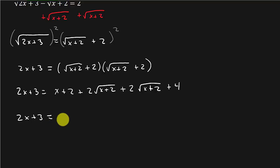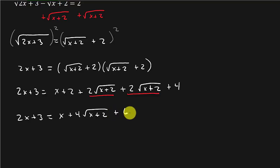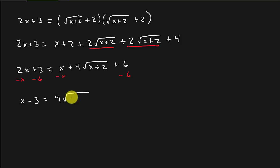So now combining like terms: 2x plus 3 equals x plus 4 square root of x plus 2 plus 6. Just like 2x plus 2x is 4x, 2 square root of x plus 2 plus 2 square root of x plus 2 is 4 square root of x plus 2, and 2 plus 4 is 6. Now we've got another radical, so we isolate it by subtracting x and subtracting 6 from both sides, leaving us with x minus 3 equals 4 square root of x plus 2.